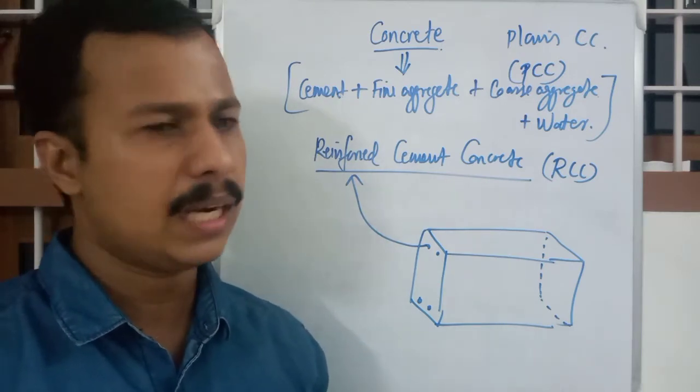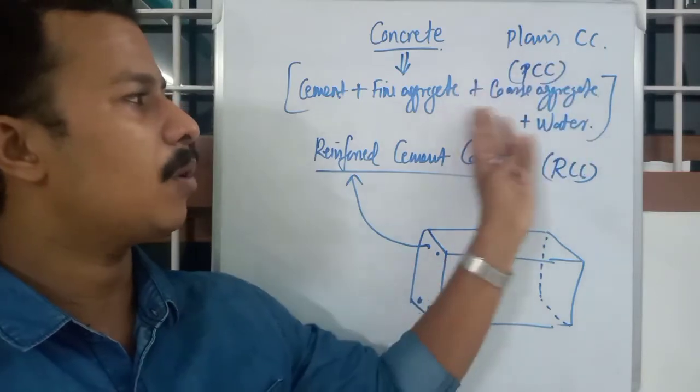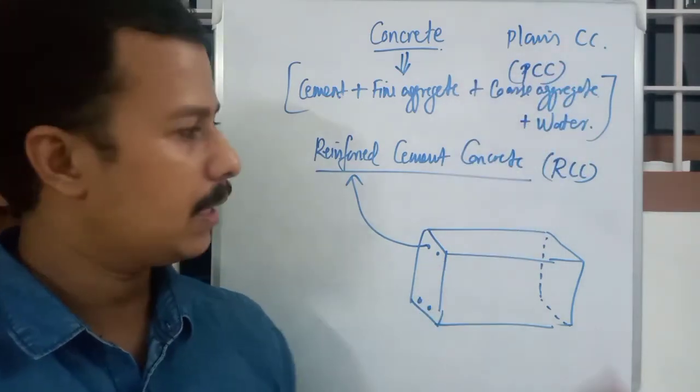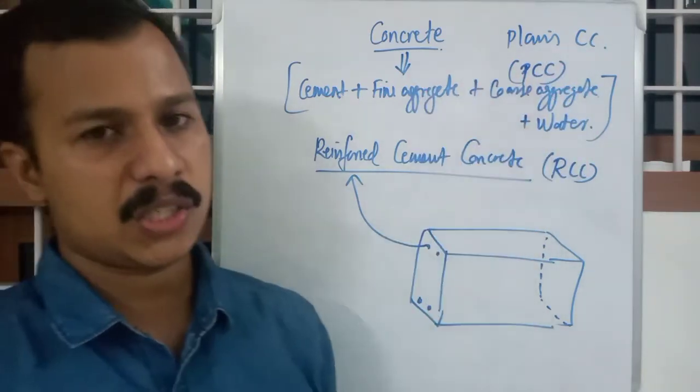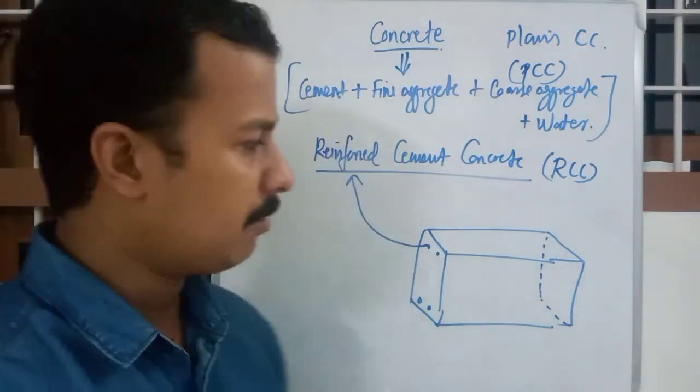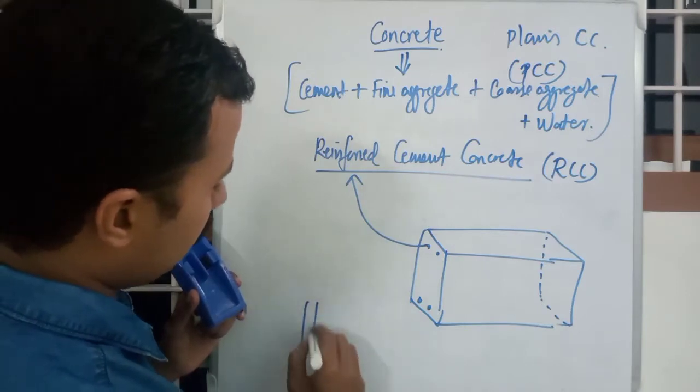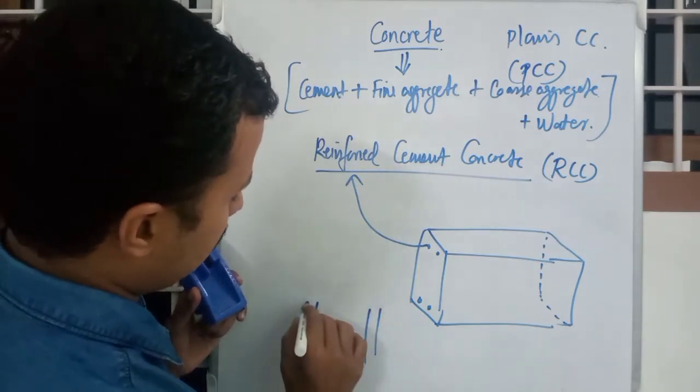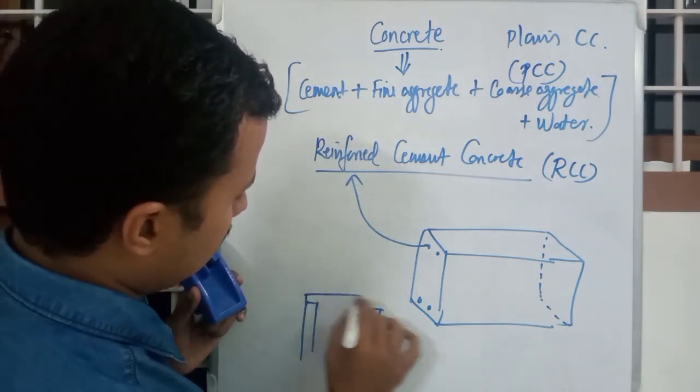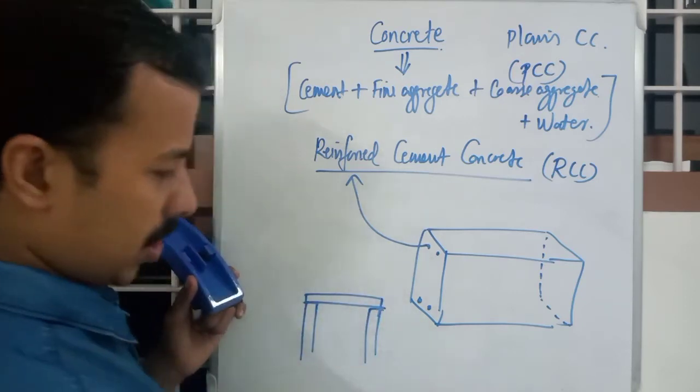That is why this old arch construction was substituted with beam construction. Because we consider steel reinforcements in here, so that there won't be any bending like this. It won't fail because of this reinforcements.